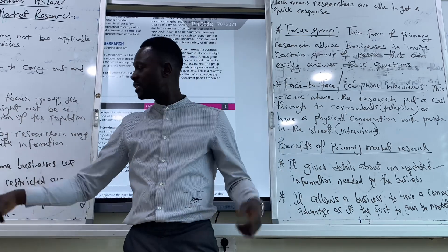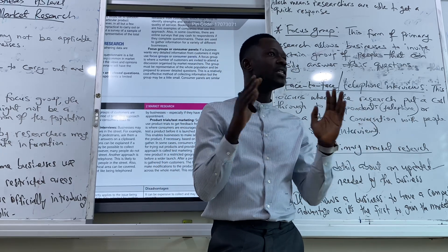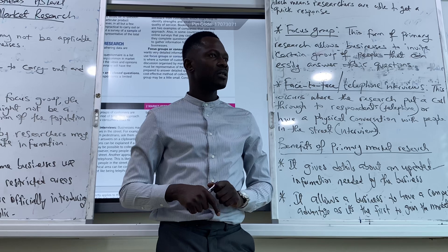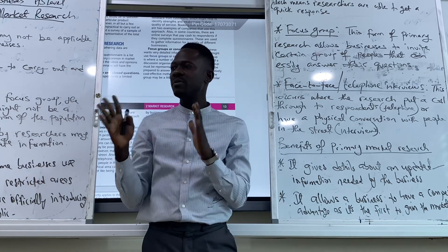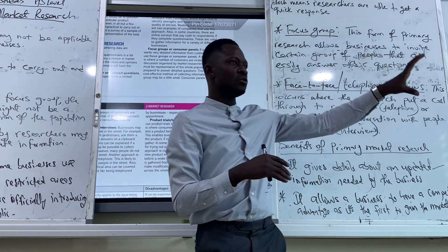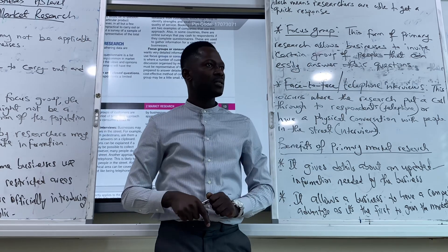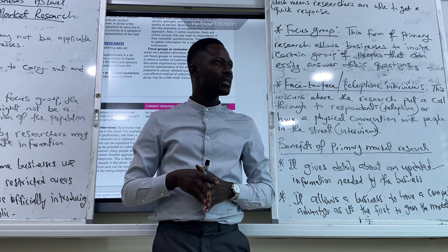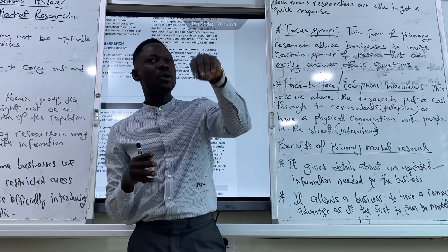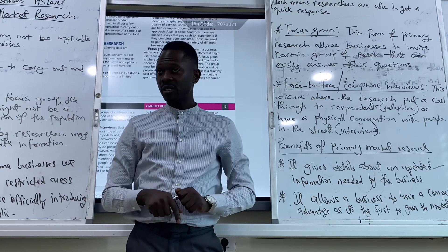The last thing to mention about primary research is test marketing. Test marketing is another form of primary research. For test marketing, the product is already done — we just have to find a restricted area to test the product and get feedback before we finally introduce it to customers. Test marketing simply means the product is made but we are not officially selling it to customers yet. We go to a restricted area, sell the product there, get feedback, and then finally launch the product into the market. Any questions about primary research? We'll be going to secondary research after this.